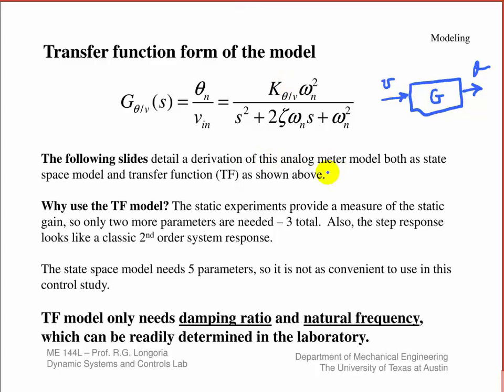I'm going to show you the derivation of this dynamic system model. You should become comfortable with seeing that whenever you see a model like this, the highest order polynomial is the order of your system. So this is a second-order system model. I'm going to derive a couple of different models and motivate why I want to use this transfer function model, and also why it becomes second order.